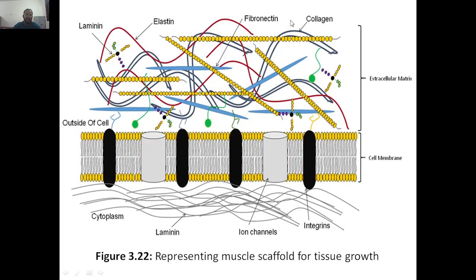The extracellular matrix has many components: laminin, elastin, fibronectin, collagen, and other molecules. After removing the cells, we are left with the structure. We can use this structural and mechanical support — that matrix acts as the scaffold.